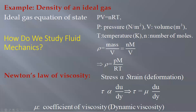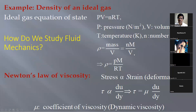In the ideal gas equation, P is pressure in Newton per meter squared, V is volume, T is temperature, and n is the number of moles or molecules, with R constant. Mass density ρ is mass per unit volume. Number density is the number of molecules times molar mass divided by volume. From this, ρ = PM/RT.